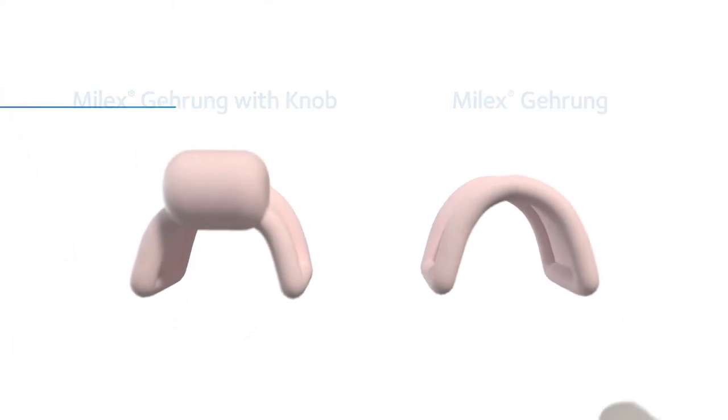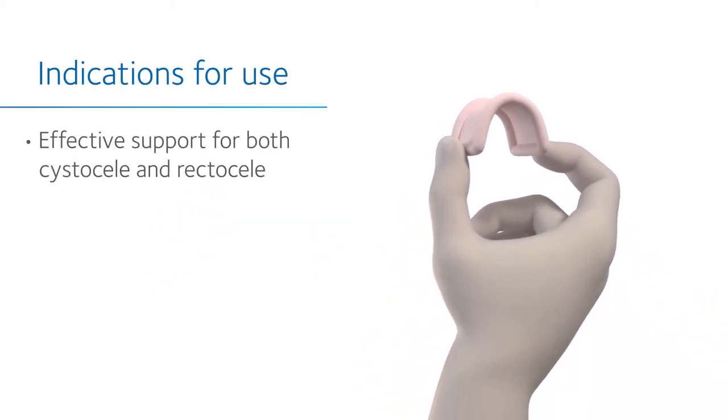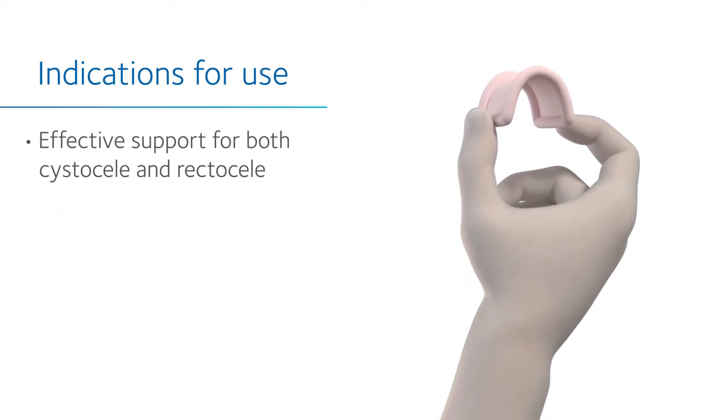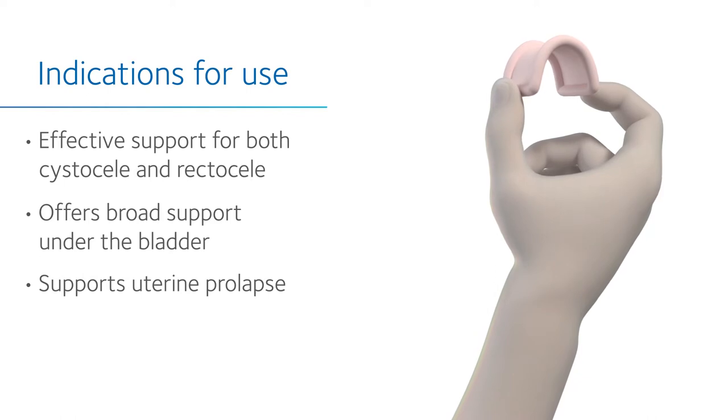Each device has specific indications for use that include effective support for both Cystocele and Rectocele, offers broad support under the bladder, and supports uterine prolapse.